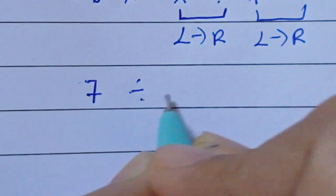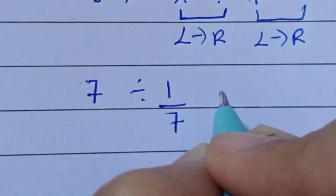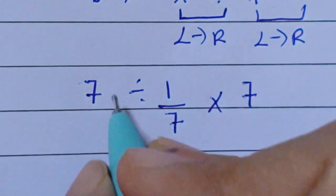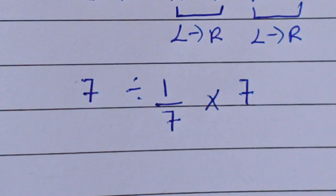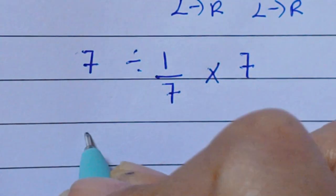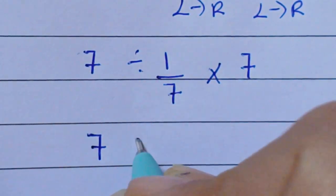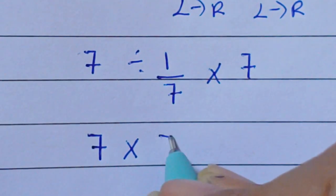So first we'll solve this part. Here a fraction is there, so use the KCF rule: Keep the first fraction as it is, change this division into multiplication, flip this fraction.